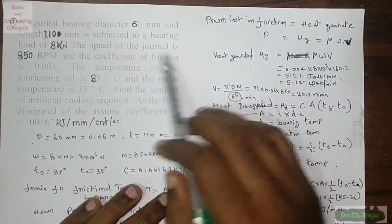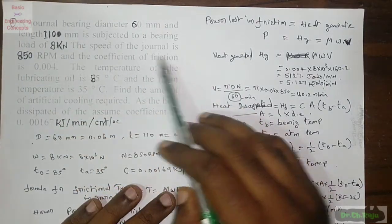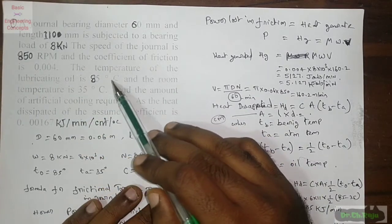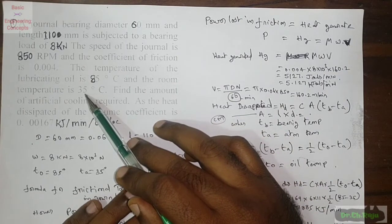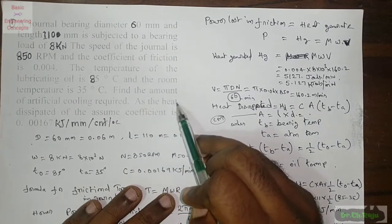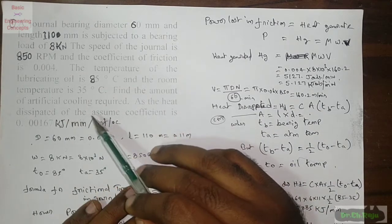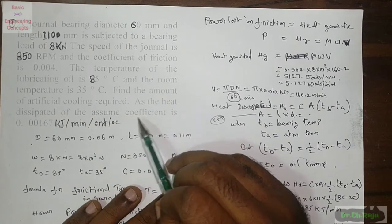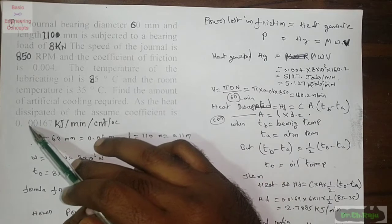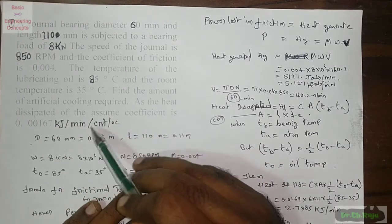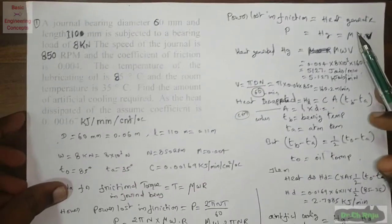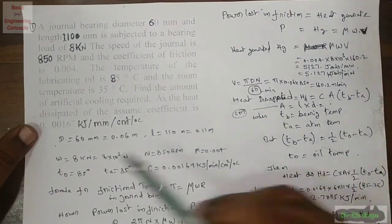The speed of the journal is 850 rpm and the coefficient of friction is 0.004. The temperature of the lubricating oil is 85 degrees C and the room temperature is 35 degrees C. Find the amount of artificial cooling required, assuming the heat dispatch coefficient is 0.00167 kilo joules per minute per centimeter square per degree C.